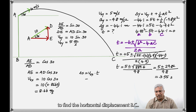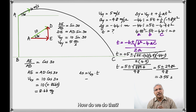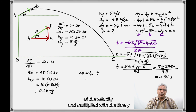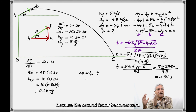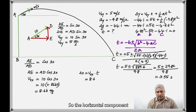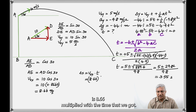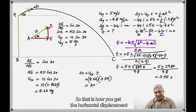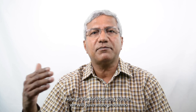We then find the horizontal displacement BC by multiplying the horizontal component of velocity by the time, since the horizontal acceleration term is zero. So delta x = 8.66 × 3.55 = 30.74 meters. This is how you handle projectile motion. In the forthcoming videos, we will have more problems and examples worked out. See you on the next video.